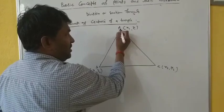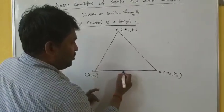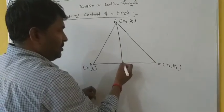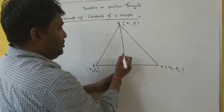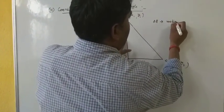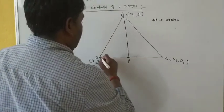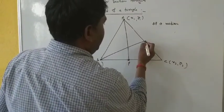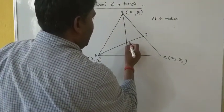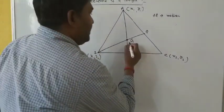So from vertex A, joining the midpoint of the front side BC — let the midpoint be P. So joining A to P, this is called the median AP. Here there is another median, and Q is the midpoint of AC. This point of intersection is called the centroid, having coordinates X, Y.